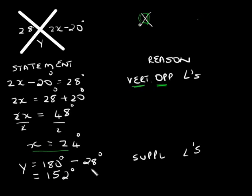We also made the statement that y is equal to 180 degrees minus 28 degrees. This is because these angles are supplementary — they are angles on a straight line. These two angles together must add up to 180 degrees, so 180 degrees minus 28 degrees gives us the value of y.